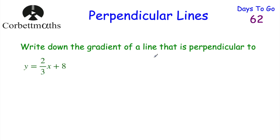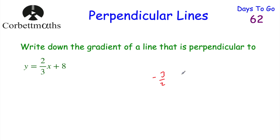Next question: write down the gradient of a line perpendicular to y equals two thirds x plus 8. The gradient is two thirds. The reciprocal of two thirds is three halves — just flip it over — and that's positive. So the negative reciprocal is negative three halves. The gradient of the perpendicular line is negative three halves.